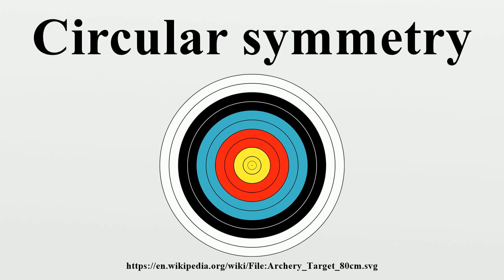The spherinder also has circular symmetry in the orthogonal direction. In mathematical physics, circular symmetry in a two-dimensional field can be expressed as a function of distance from a central point only. This means that all points on each circle take the same value.